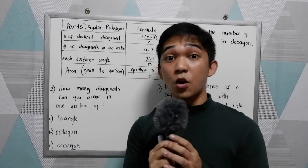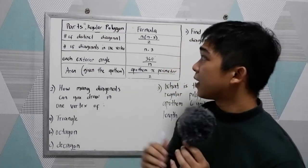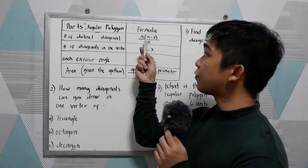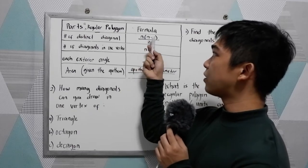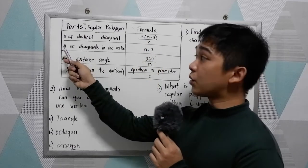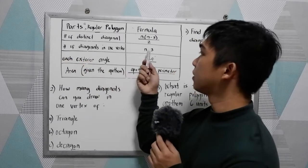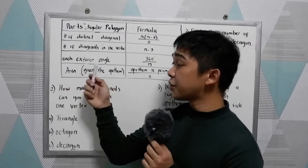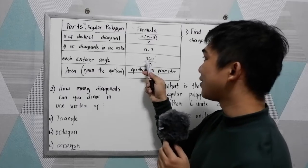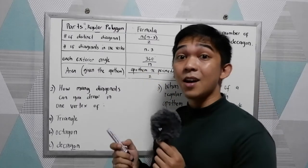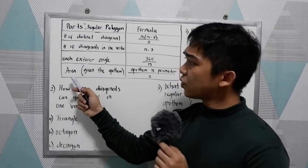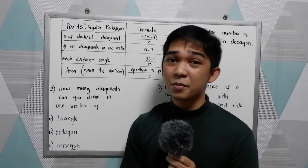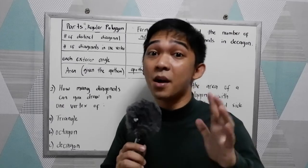You will also encounter the following formulas for regular polygons. To get the number of distinct diagonals, use N times N minus 3 all over 2. To get the number of diagonals from one vertex, use N minus 3. To get each exterior angle of a regular polygon, use 360 over N, where N is the number of sides. To get the area given the apothem, use apothem times perimeter all over 2. To get the perimeter, multiply the side length by the number of sides.